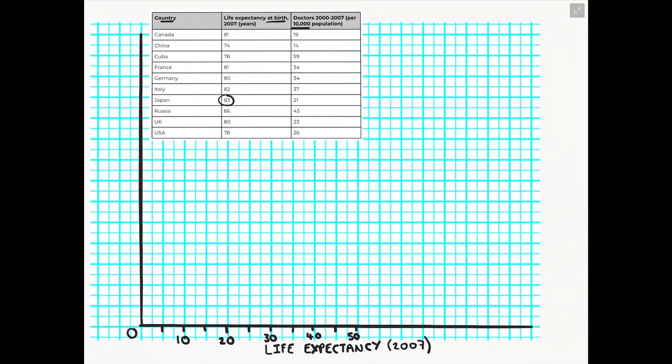Don't bunch all the numbers together, otherwise it's going to make it really hard and difficult to plot your points. So as you can see here, I'm going to decide to go up in 5s. So every 2 squares is going to be worth the value of 5, which means every 4 squares will be the value of 10. And that way, my scatter graph is going to be nice and spread out and evenly distributed.